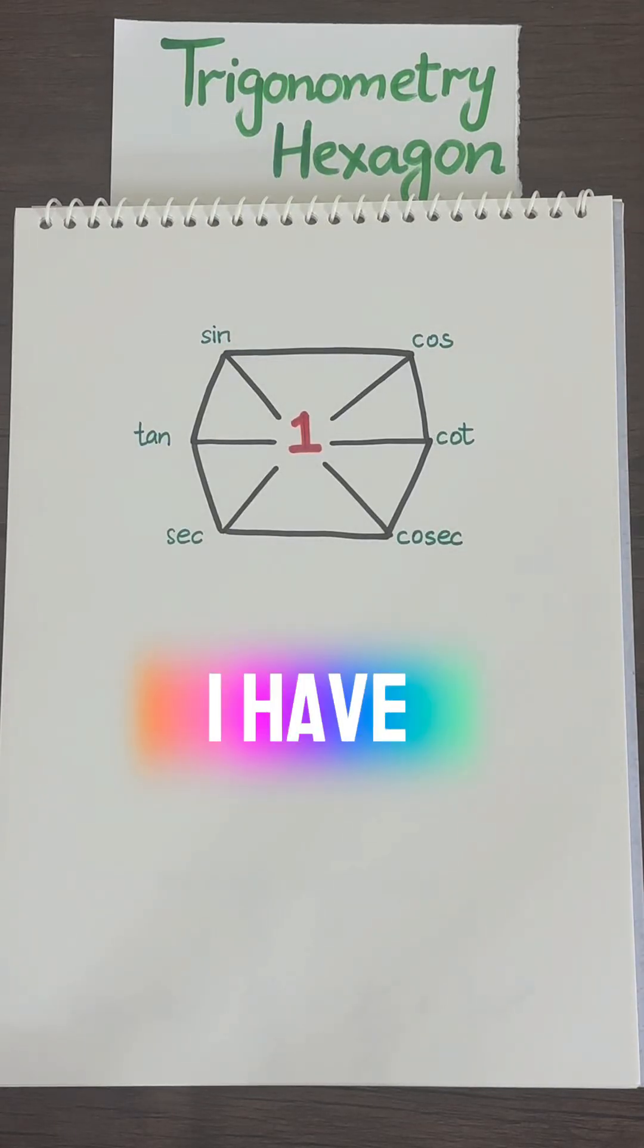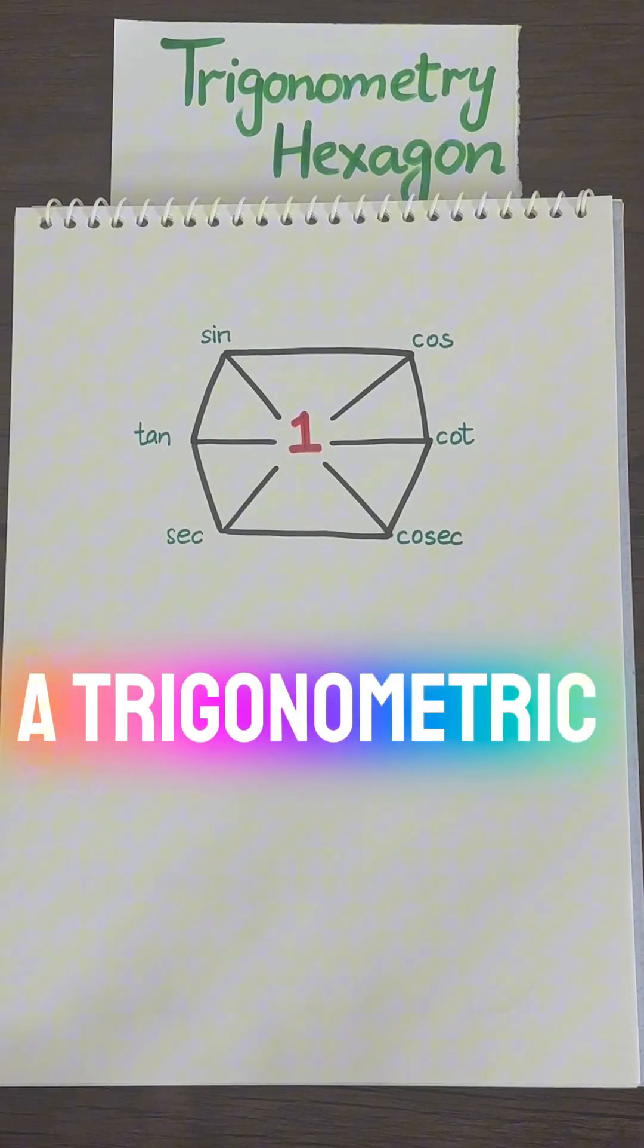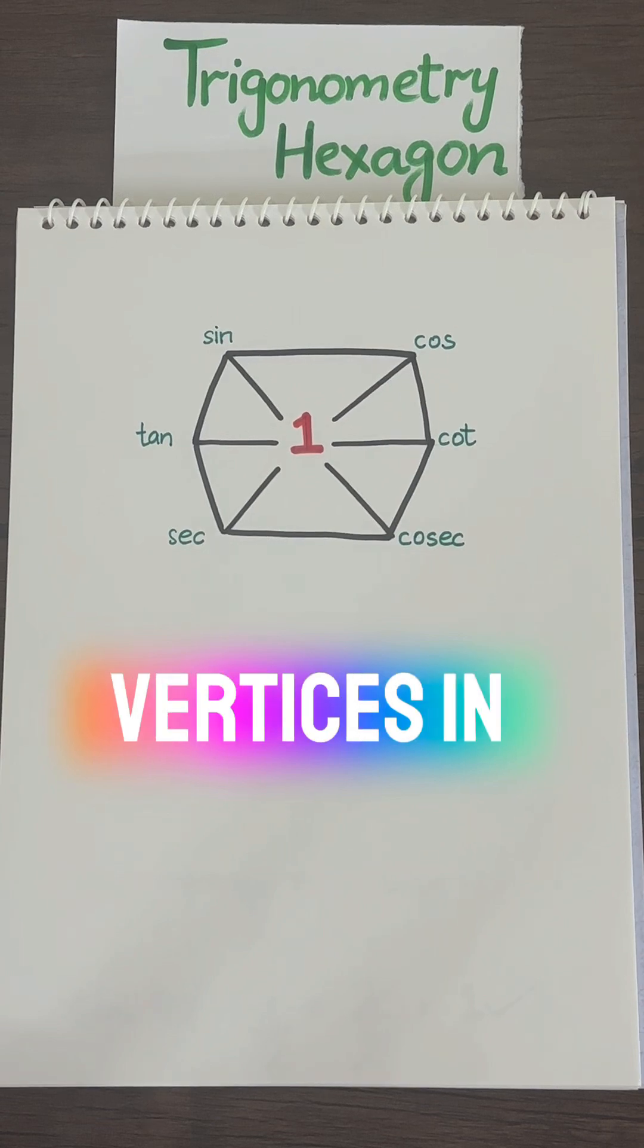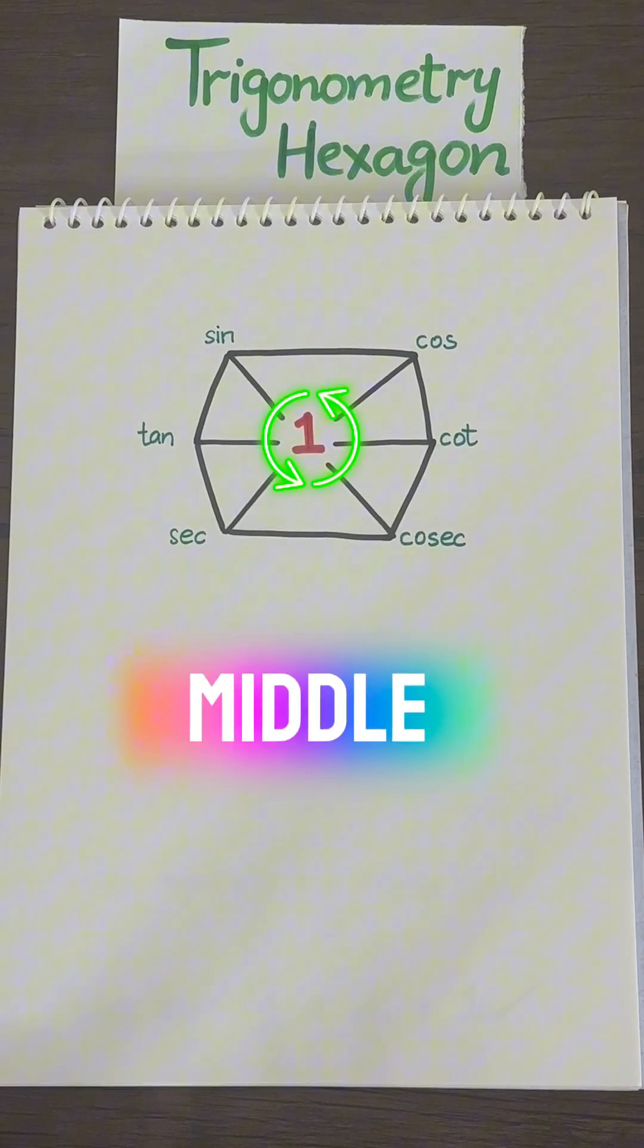This is one of the best maths hacks I have ever learned. It's called a trigonometric hexagon with these vertices in exact order and one in the middle.